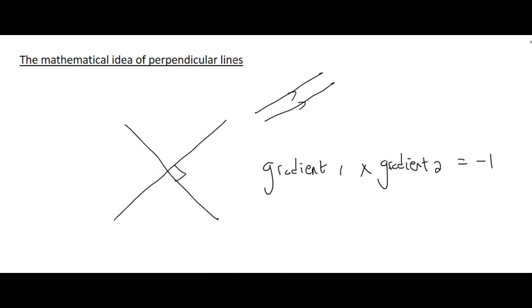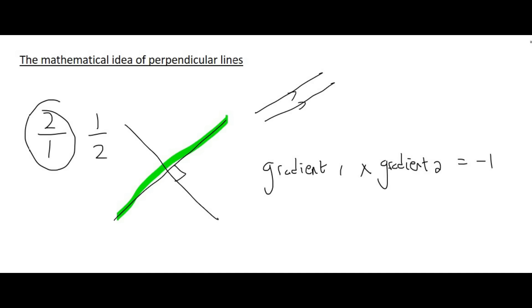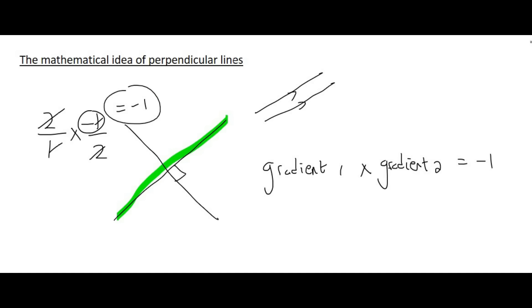Let's see how this works. Say the gradient of a line is 2, which is the same as 2 over 1. The complete opposite of that is 1 over 2, and then you change the sign — so if it's positive, change it to negative, giving minus 1 over 2. If you multiply the two gradients together, the twos cancel, the ones cancel, and you're left with minus 1.